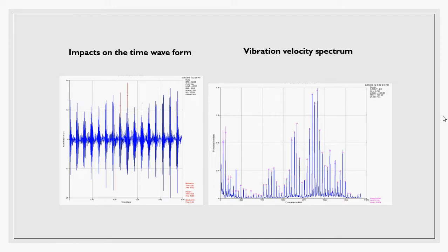There were high amplitude impacts on the time waveform, and the velocity vibration spectrum was showing the running speed with many harmonics.